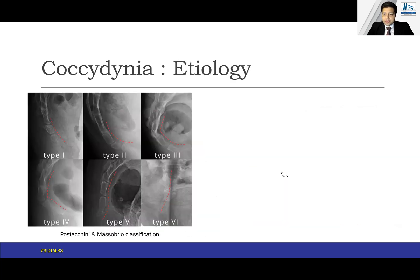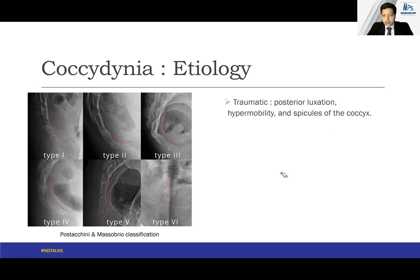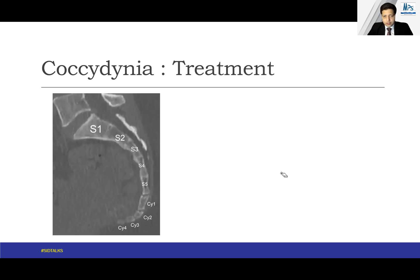Various classifications have been proposed. It was thought that a bent coccyx in the sitting or standing position could explain the symptoms, though this is not always the case. Radiological classifications have been proposed on the basis of which etiology has been attempted to be explained. Traumatic etiology is one of the most common. Posterior luxation, hypermobility, and spicules are implicated in the etiology. Childbirth, as already mentioned, as well as infections and tumors of the coccyx — which are rare — are also causes.